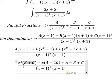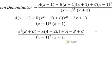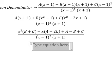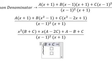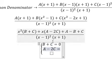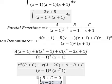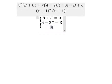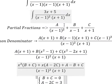a minus b plus c equals the constant number 5. b plus c — we see that we don't have x squared here, so that means b plus c equals 0. Now we create the system of equations: b plus c equals 0, a minus 2c equals 3, and a minus b plus c equals 5.